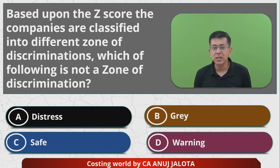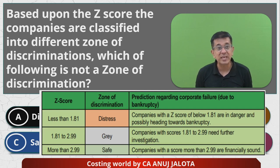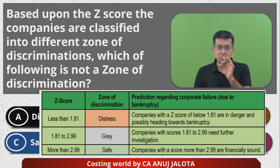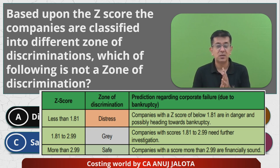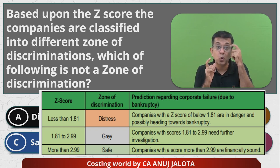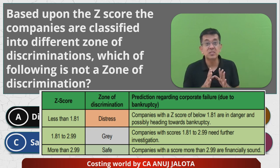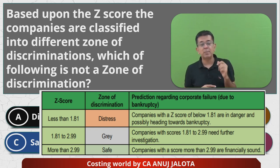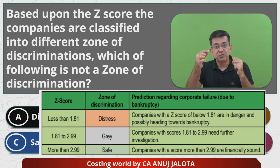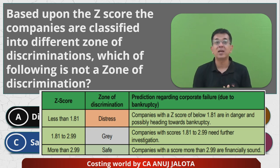Your time is over. Now the module says — and this is why the Z score is there — there are certain parameters, and based upon those parameters we keep on accumulating the score, which is called the Z score. If your company's Z score is less than 1.81, it means that company is in distress. Distress means the company is now moving towards bankruptcy. If something is not done, your company will go towards bankruptcy. This is the worst kind of performance.